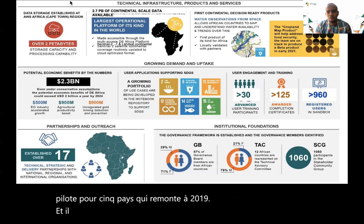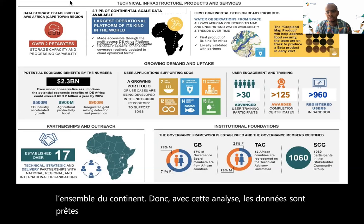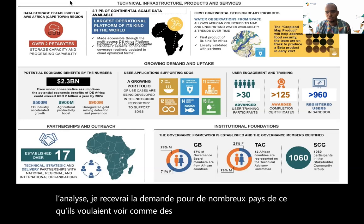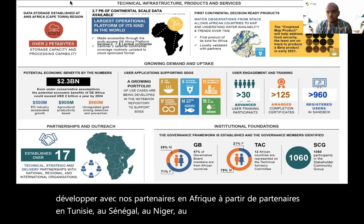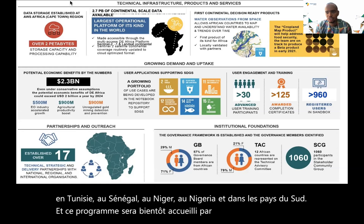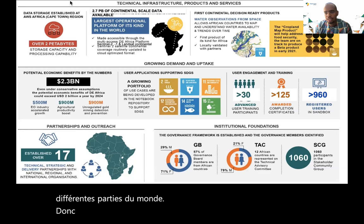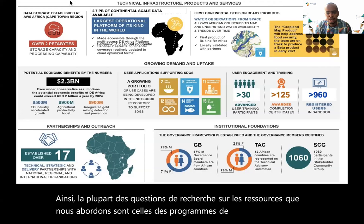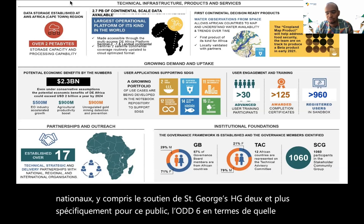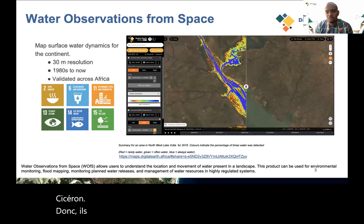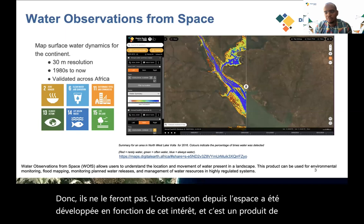With this analysis-ready data, we received requests from many countries for continental products. The first one was the Water Observation from Space, which we co-developed with our partners in Africa from Tunisia, Senegal, Nigeria, and southern countries. This program will soon be hosted by the South African Space Agency. Most of the research questions we're addressing relate to national development agendas, including supporting SDG2 and more specifically SDG6 in terms of water extent and water quality. The Water Observation from Space was developed based on that interest — it's a 30-meter product providing data back to 1980 to see how the continent has changed in terms of water variability.